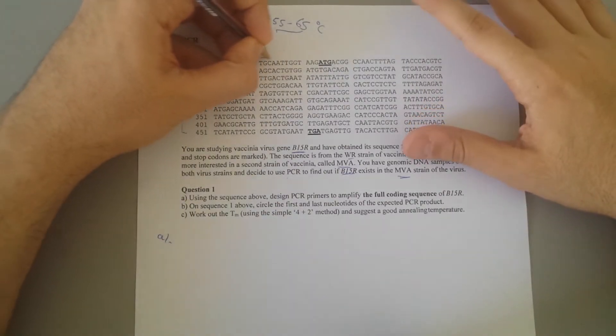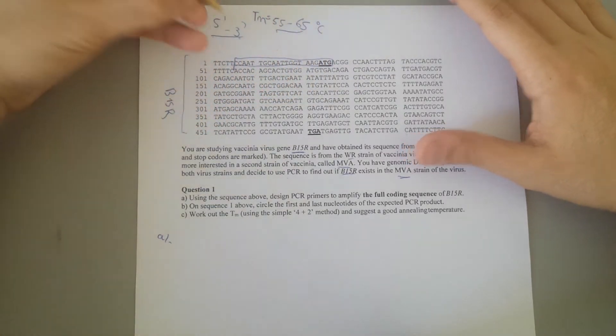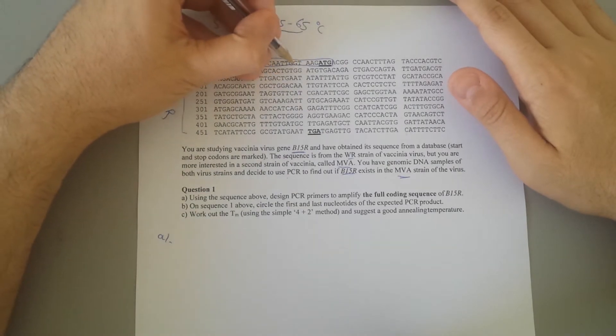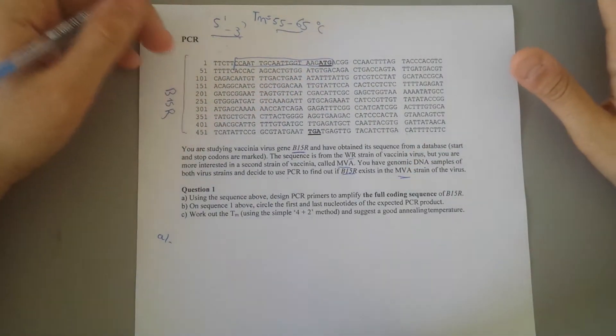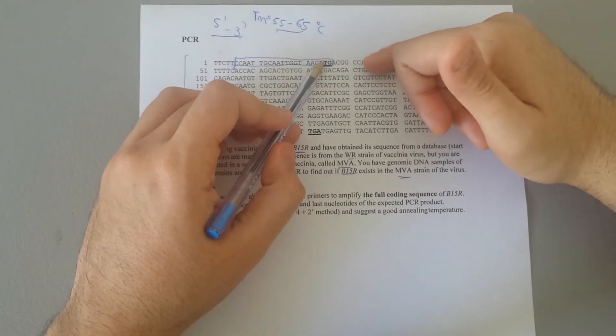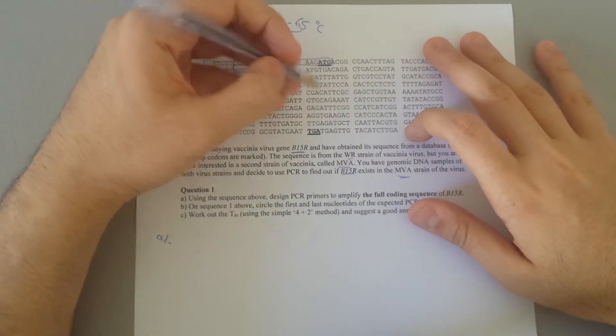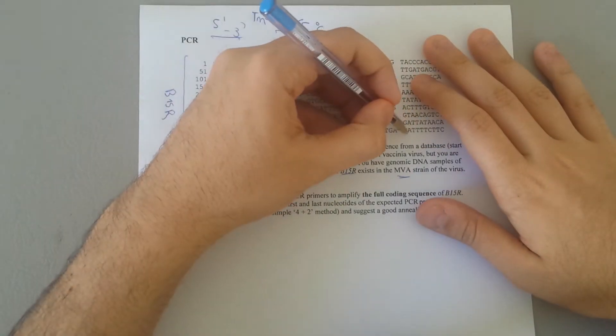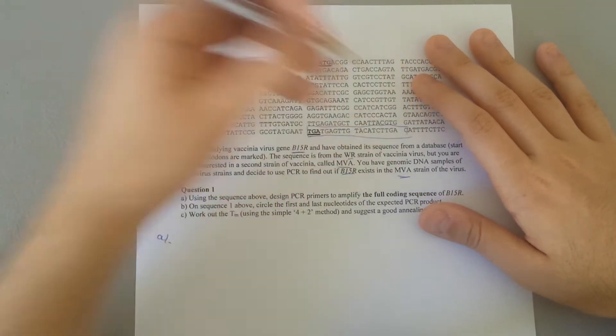I'm going to do the forward primer, like that. You could go from here to there, you could go from here to there, it doesn't matter. As long as you have this ATG being formed and we're going to have the coding sequence here, it's okay. And here, what I'm going to do is just, I'm going to start, again, you could do from here to here, doesn't matter. I'm going to start from here to here.